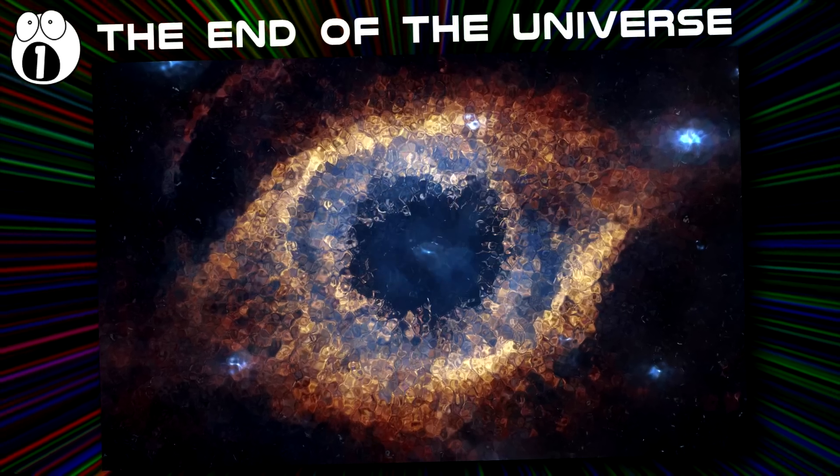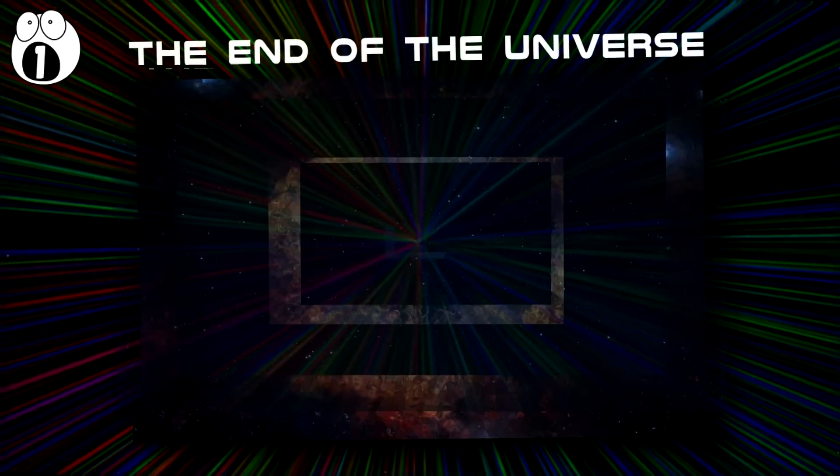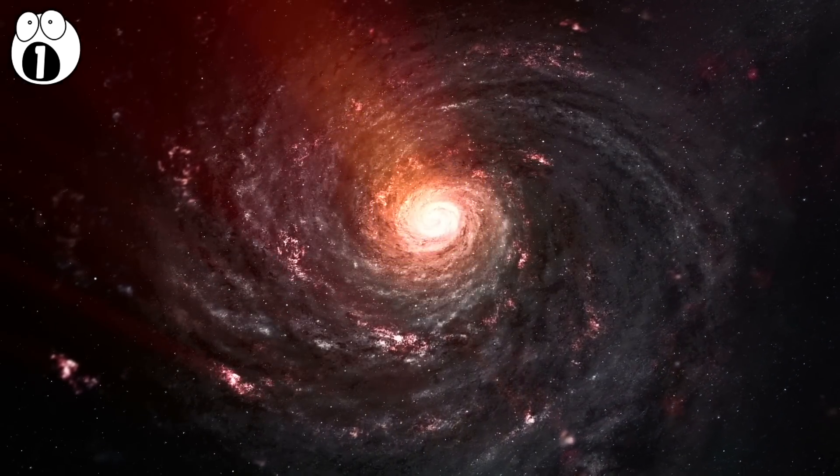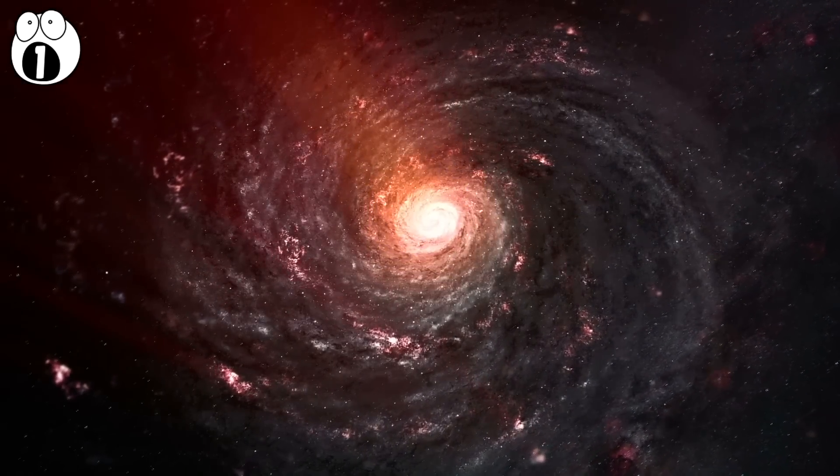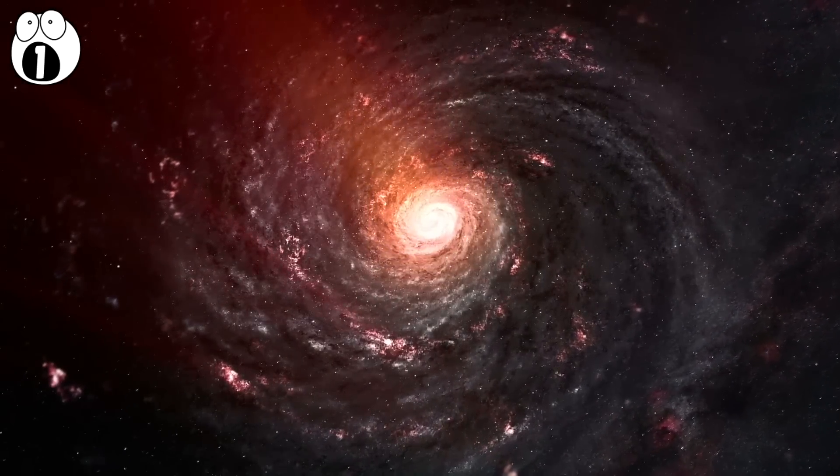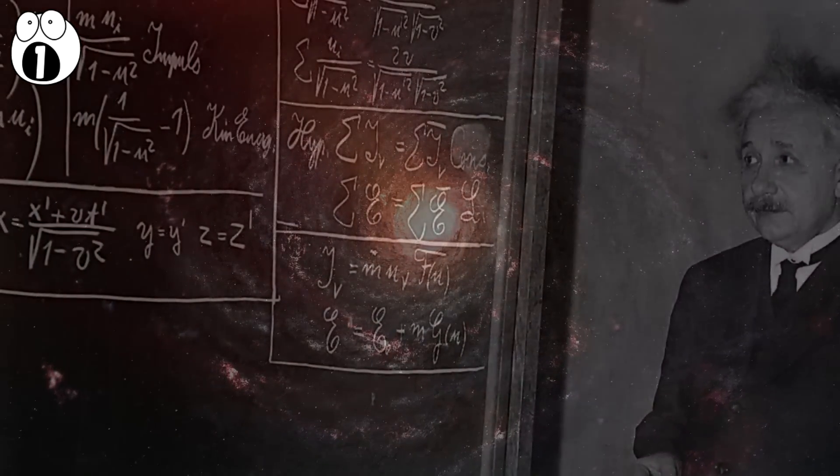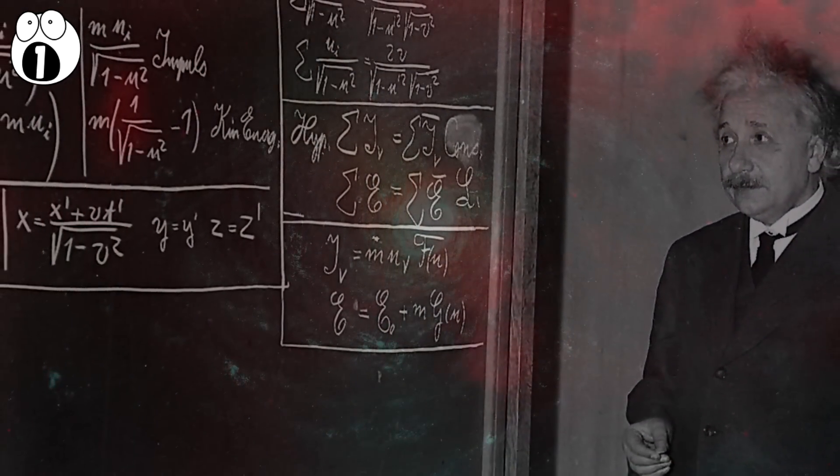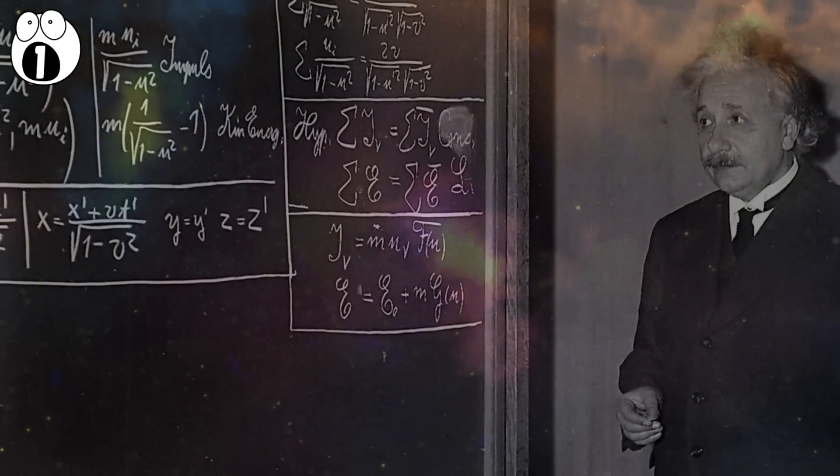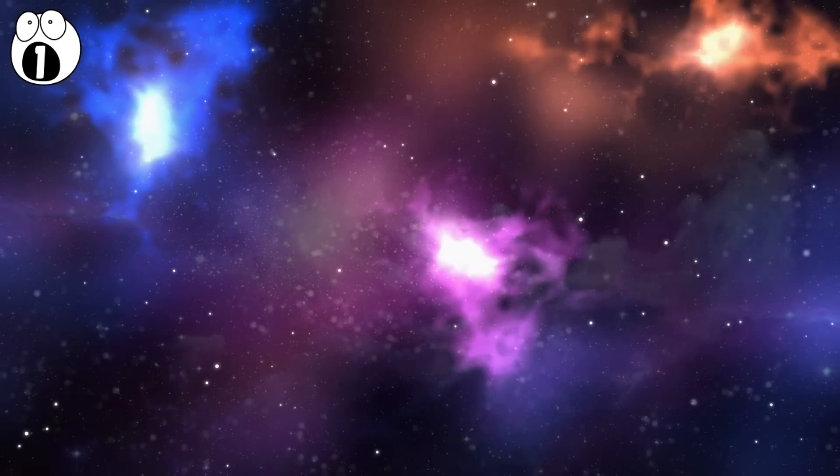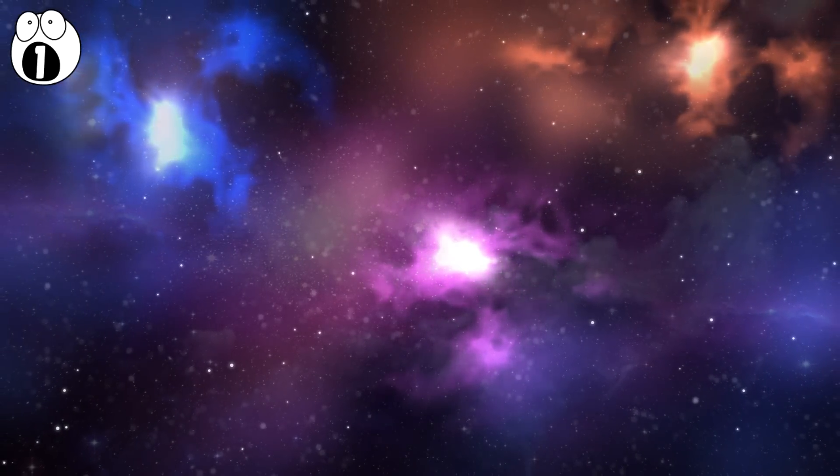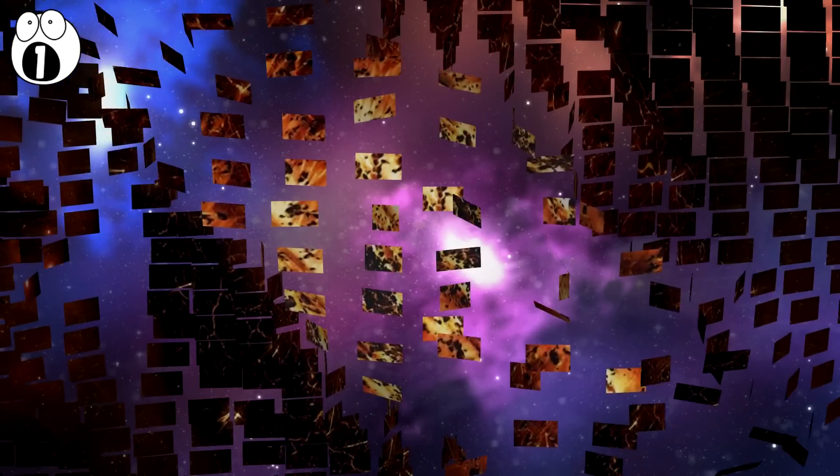The end of the universe. The ultimate fate of our universe is something long debated, and because of that, there are lots of different theories about how our universe will end. The main theory used to study the possible fate of our universe is Einstein's theory of general relativity. Since every possible solution to its equation implies that there exists an ultimate fate of the universe, and there is no good outcome.